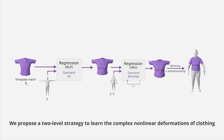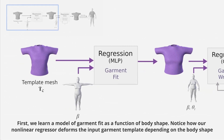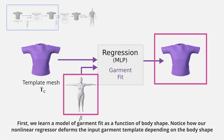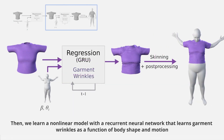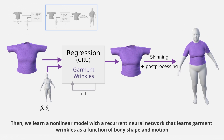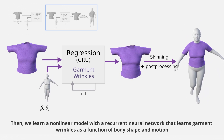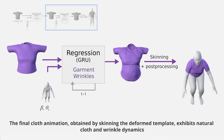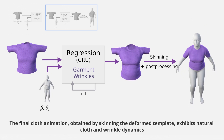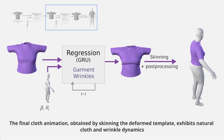We propose a two-level strategy to learn the complex nonlinear deformations of clothing. First, we learn a model of garment fit as a function of body shape. Notice how our nonlinear regressor deforms the input garment template depending on the body shape. Then, we learn a nonlinear model with a recurrent neural network that learns garment wrinkles as a function of body shape and motion. The final cloth animation, obtained by skinning the deformed template, exhibits natural cloth and wrinkle dynamics.